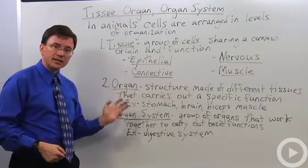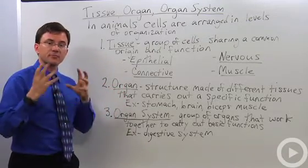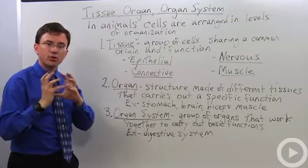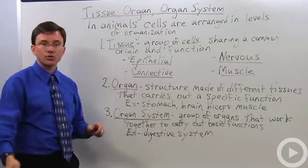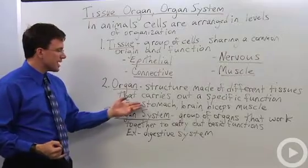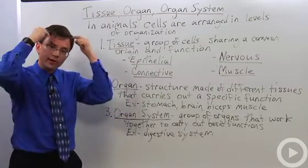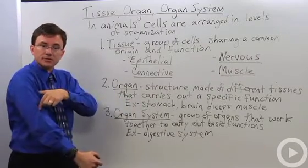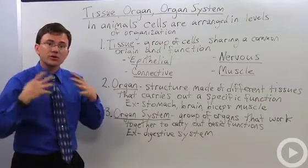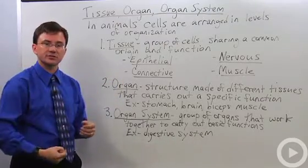Now, an organ is a structure that's made of a number of different kinds of tissues, all put together and organized in order to carry out a very specific function. For example, your stomach is an organ, your brain is an organ, my bicep muscle is an organ, my tongue is an organ. These are all examples of combinations of different tissues.